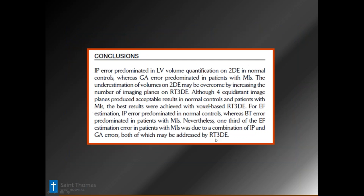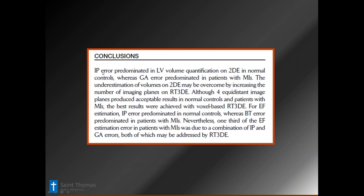They found that image positioning error was the dominant problem in 2D biplane, with geometrical error a little less — but mostly in patients with MIs who have an aneurysm not seen in the 4-chamber, 2-chamber, or 3-chamber views, so that doesn't factor into volume changes and we lose accuracy. There's no doubt that ischemic MR is the real key element for 3D echo.